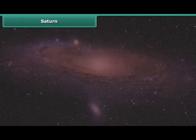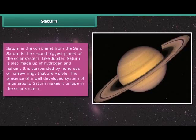Saturn is the sixth planet from the Sun. Saturn is the second biggest planet of the solar system. Like Jupiter, Saturn is also made up of hydrogen and helium. It is surrounded by hundreds of narrow rings that are visible. The presence of a well developed system of rings around Saturn makes it unique in the solar system.